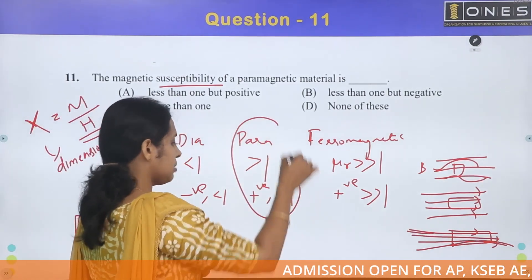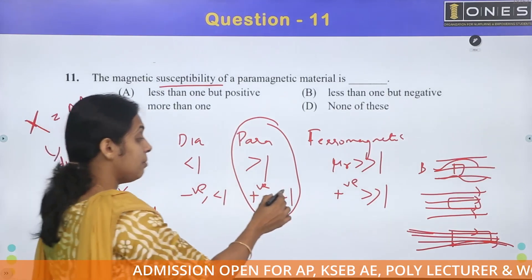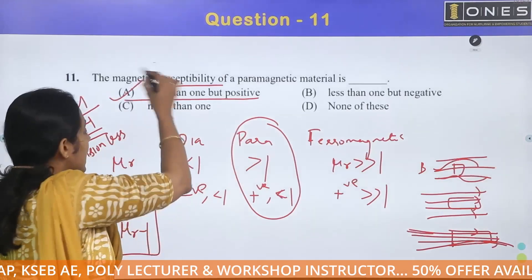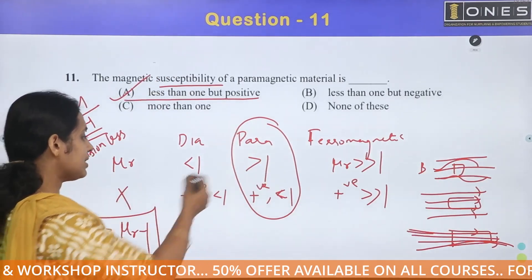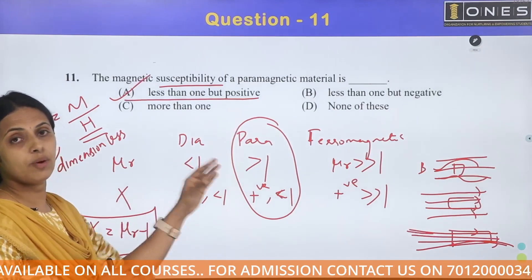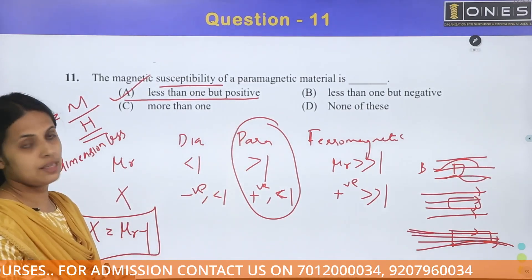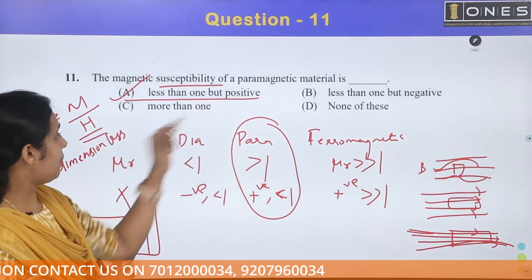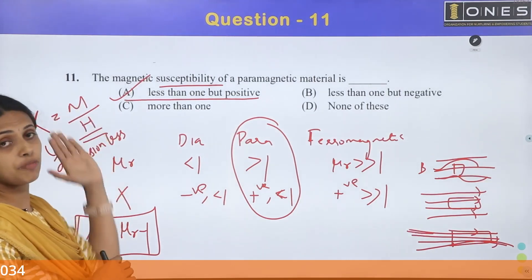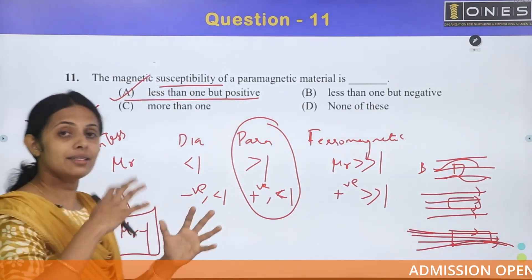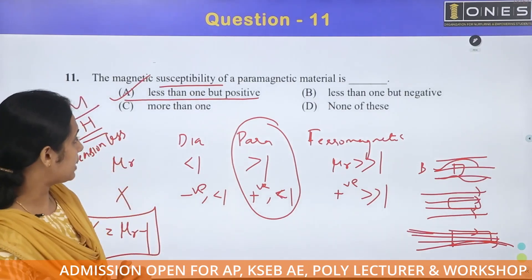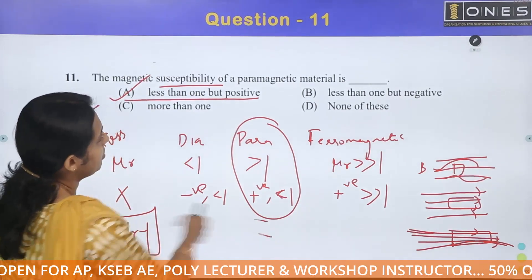We are looking at the magnetic susceptibility of paramagnetic material. What is it? It is positive and less than one. So the correct answer is option A. Susceptibility is the ratio of magnetization to magnetizing force — that is the measure of magnetization with respect to magnetizing force.